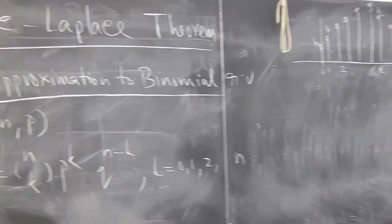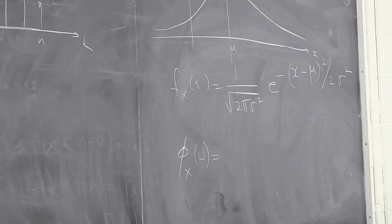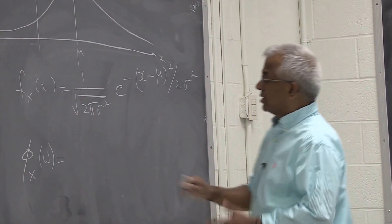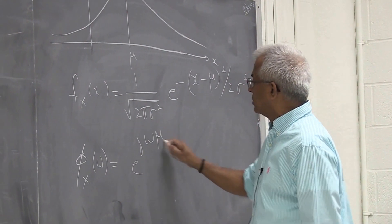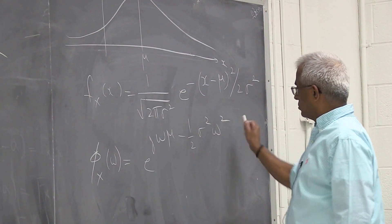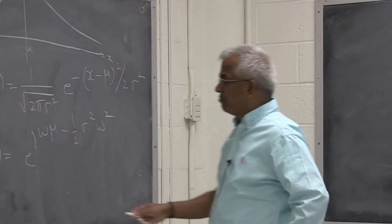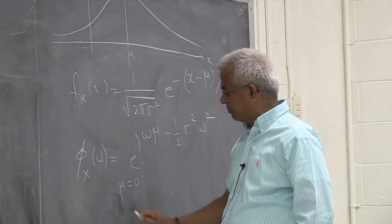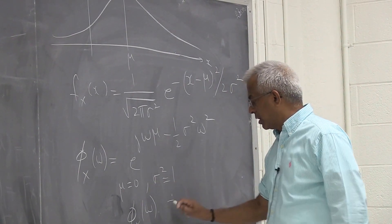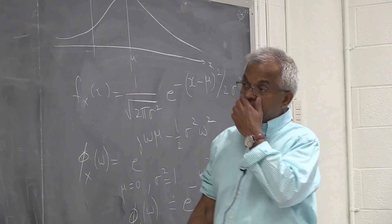The easiest way to do this is to look at the characteristic functions of both random variables and show that under some condition one is going to look like the other. For a Gaussian, the characteristic function is a standard result. In particular, if μ is 0 and σ² is 1, then the characteristic function looks like e raised to minus ω²/2.